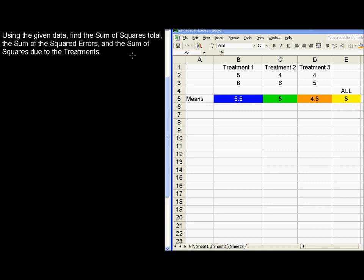Using the given data, find the sum of squares total, the sum of the squared errors, and the sum of squares due to the treatments.